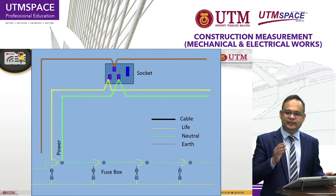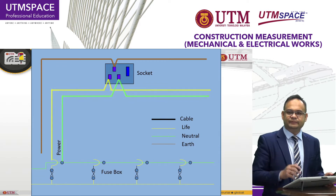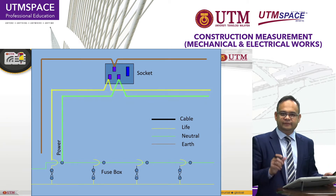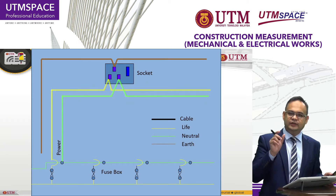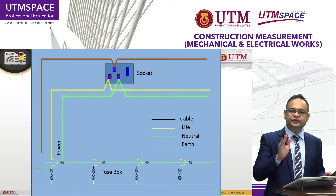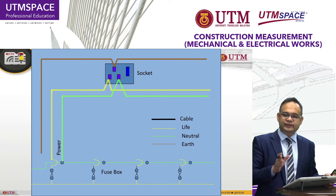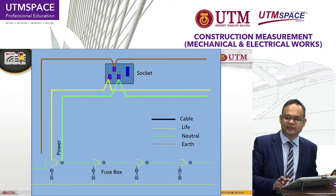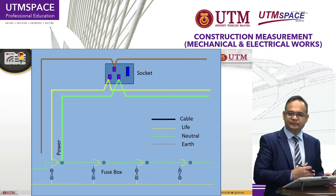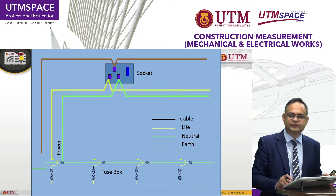Normally, in electrical engineering installation in a building, the source of power comes from what we call a DB. From the fuse in the DB, or MCB — Miniature Circuit Breaker — we supply using a cable inside a conduit to the particular switch socket outlet. This is what we call live wire supply, from the DB to the switch socket outlet. This is what we call a straightforward process.